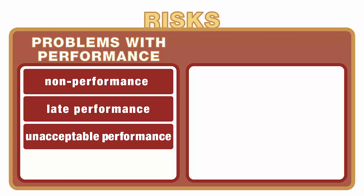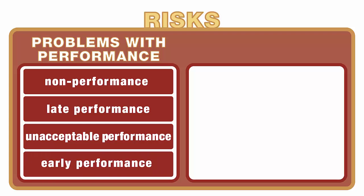There may even be problems with early performance. If a contract calls for the shipment of goods so that the goods arrive at the place of the buyer in October, but instead the goods are shipped and arrive in August, that means the buyer has to arrange for storage of those goods until November when it actually needs the goods. So early performance can also be a problem in contracts.